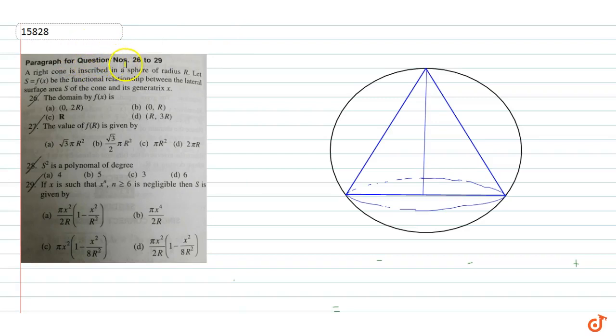A right cone is inscribed in a sphere of radius r. Let s equals f(x) be the functional relationship between the lateral surface area s of the cone and its height x. We need to calculate the lateral surface area. So what we say is the length given x, we don't know what we say about the other dimensions.